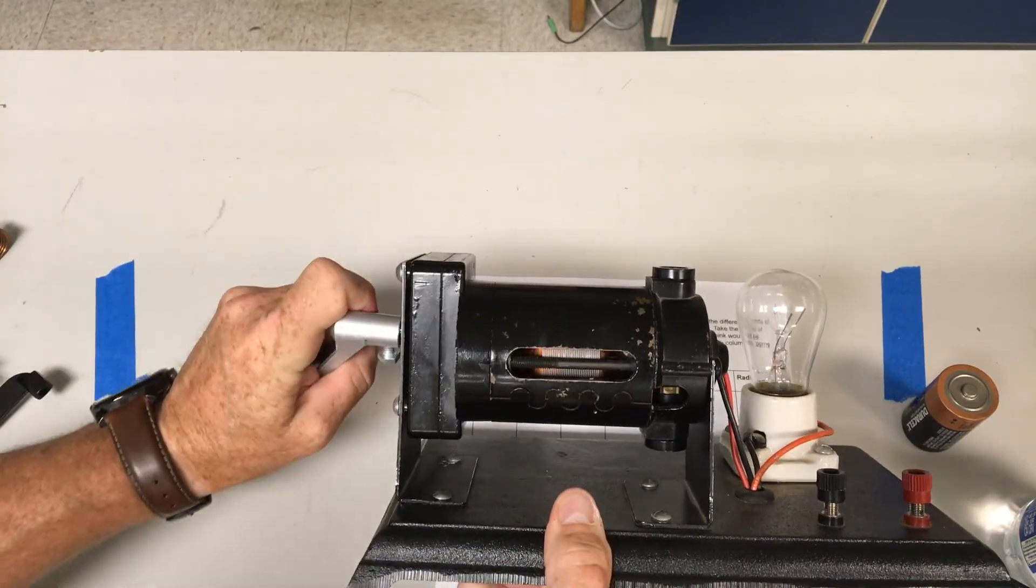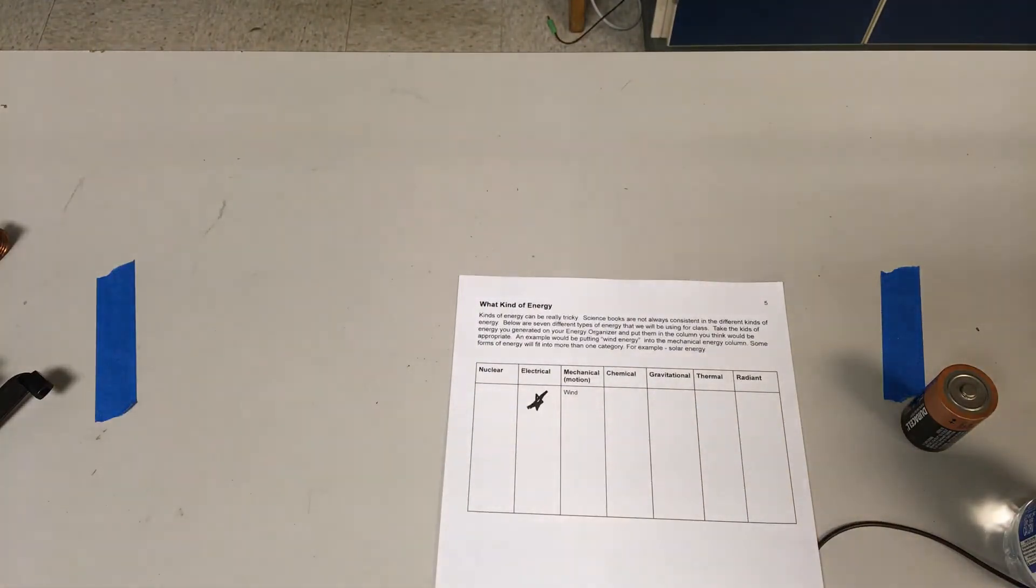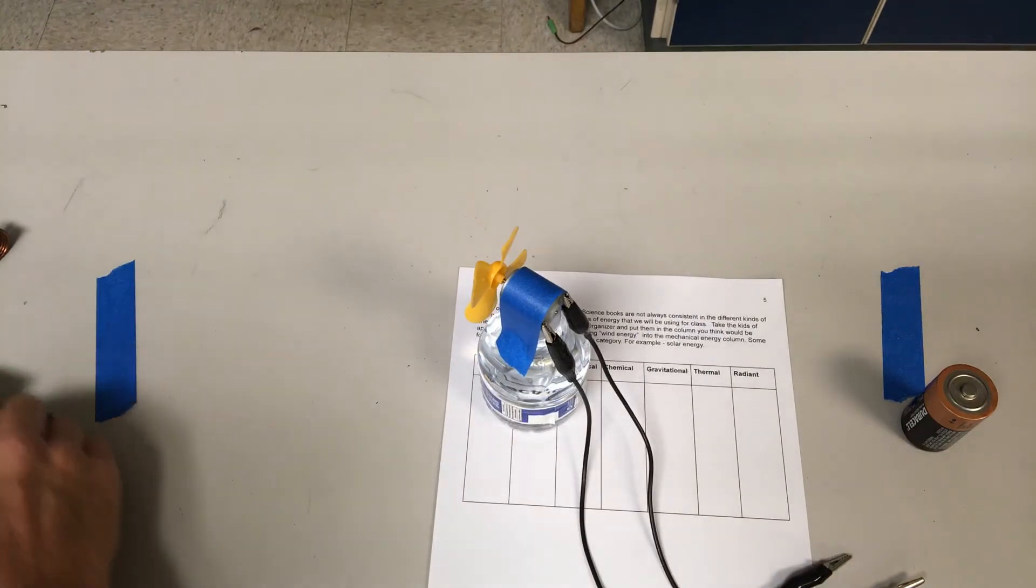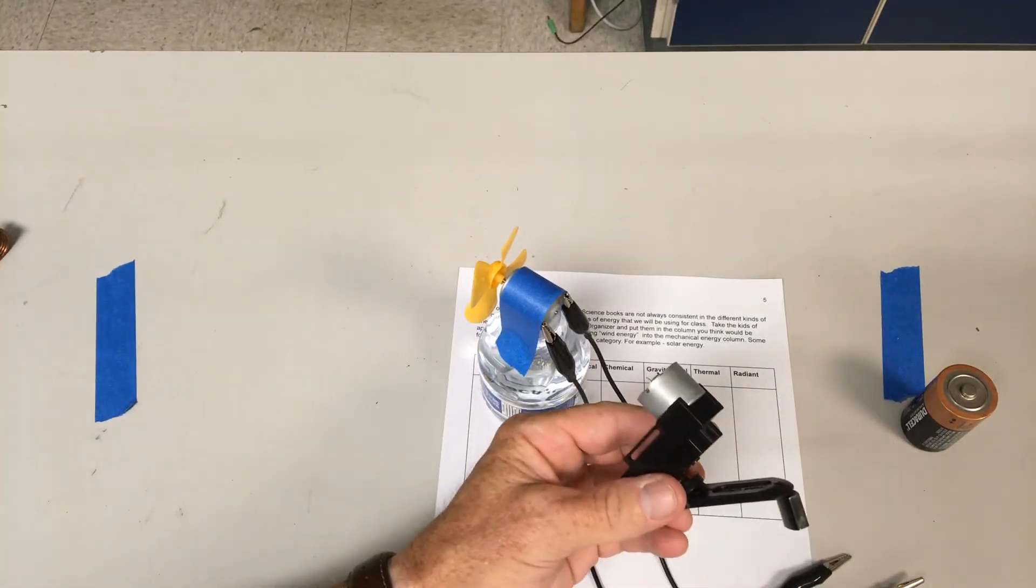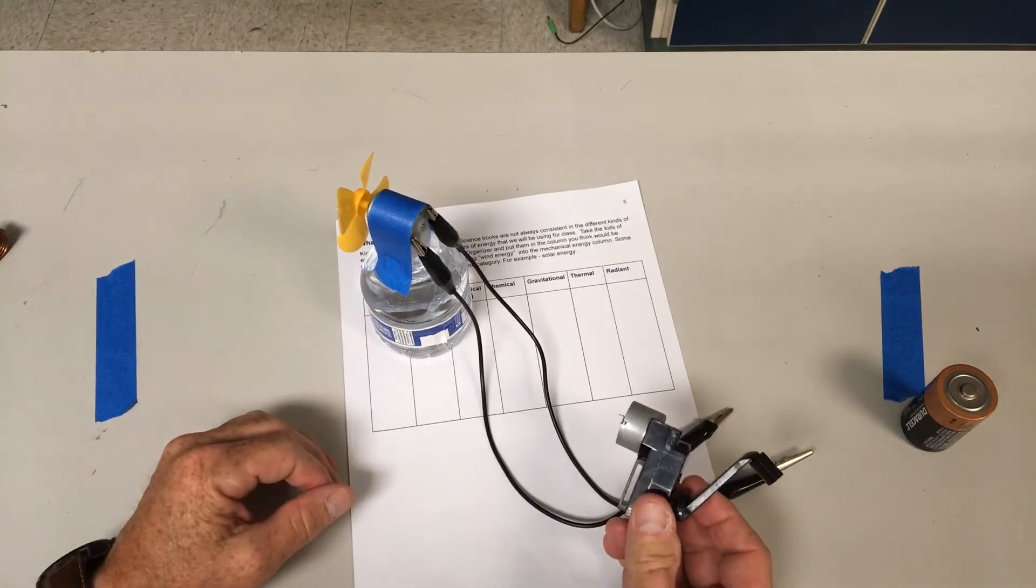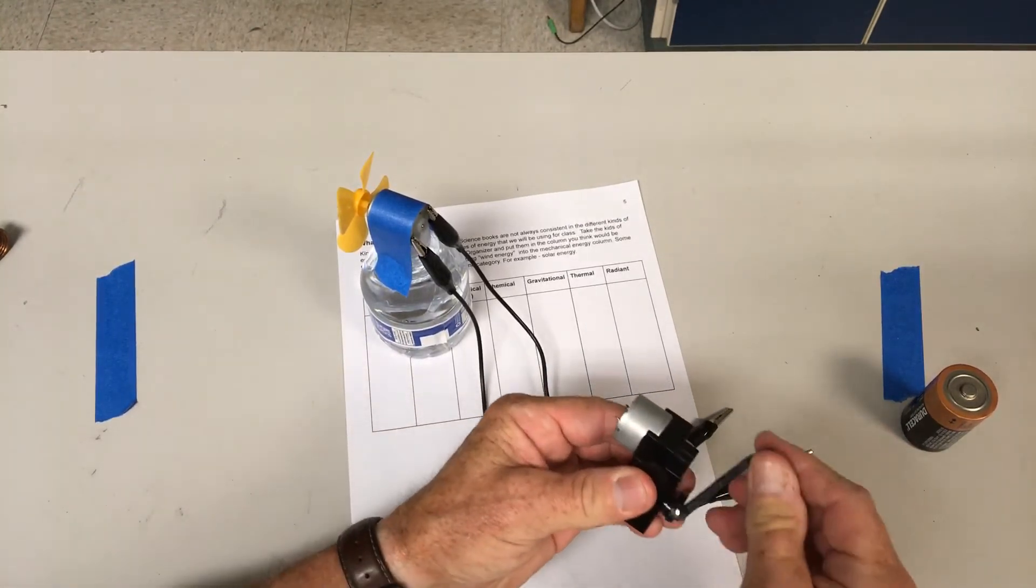Now I've got—I don't want to use this because it's big and bulky—I'm going to use a more friendly version of this, which is a little hand generator right here. The little hand generator has the same parts as the big generator: it's got magnets and copper and something to make things spin.